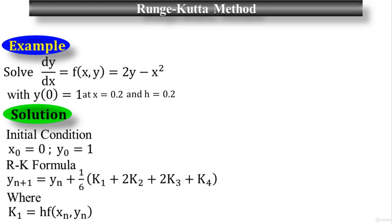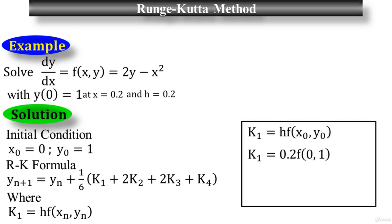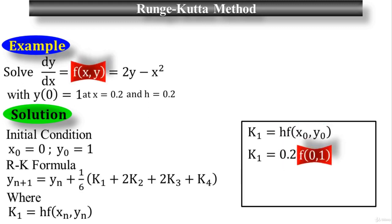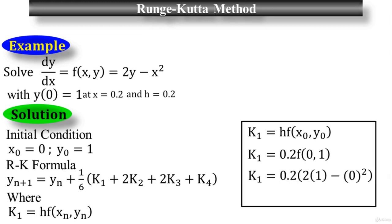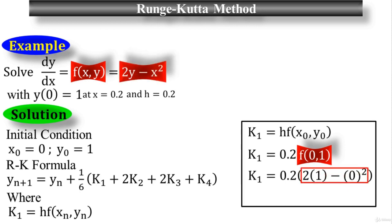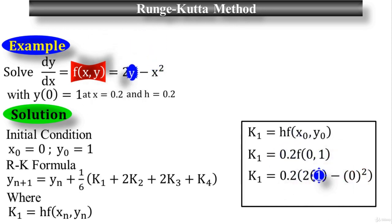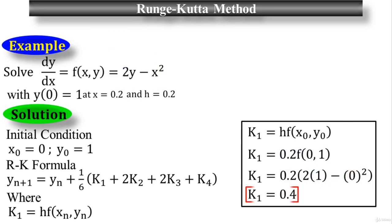Now let me find the approximate value of k₁, which is the very first stage. Substituting the values where h = 0.2, x₀ = 0, and y₀ = 1: f(0, 1) equals 2y minus x squared, where y = 1 and x = 0, which equals 0.2 times (2×1 minus 0²). The final value for k₁ is 0.4, which is the approximate value for the first stage.